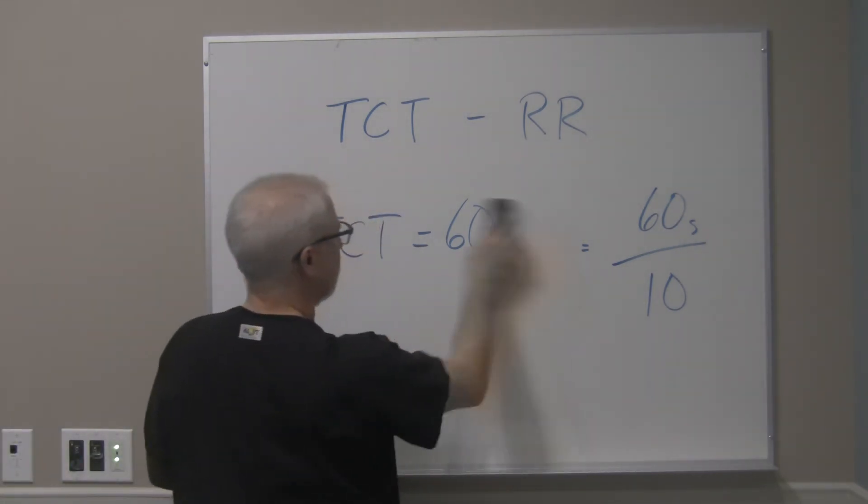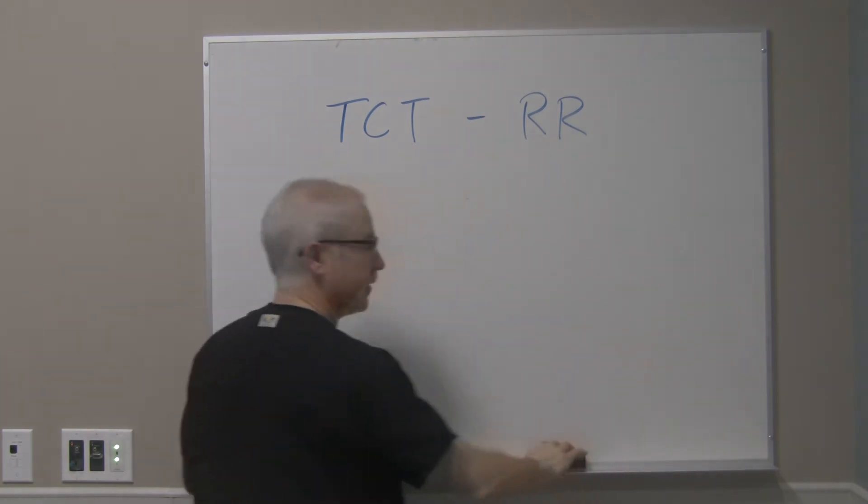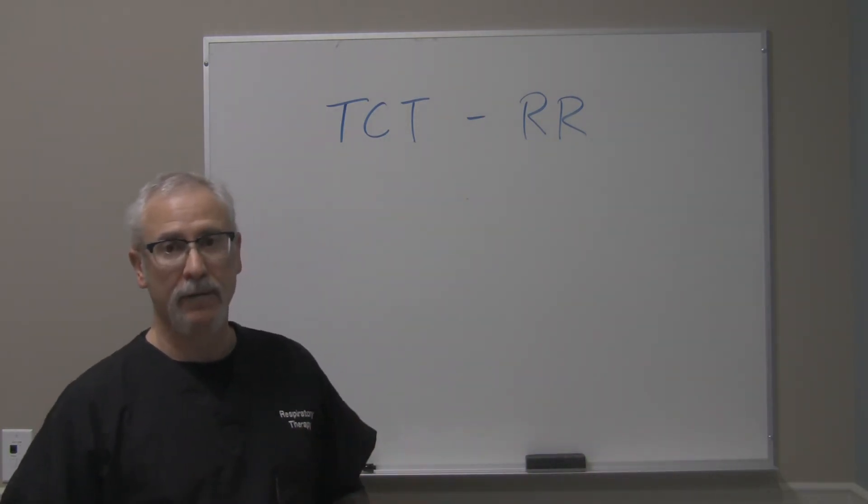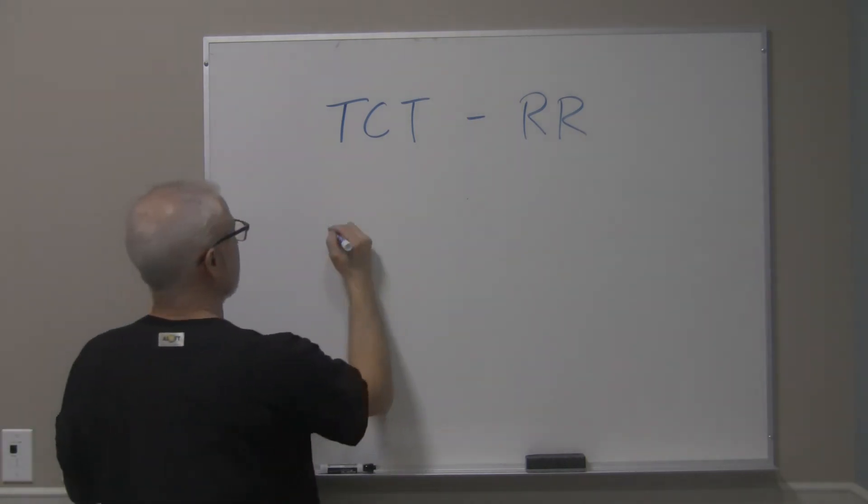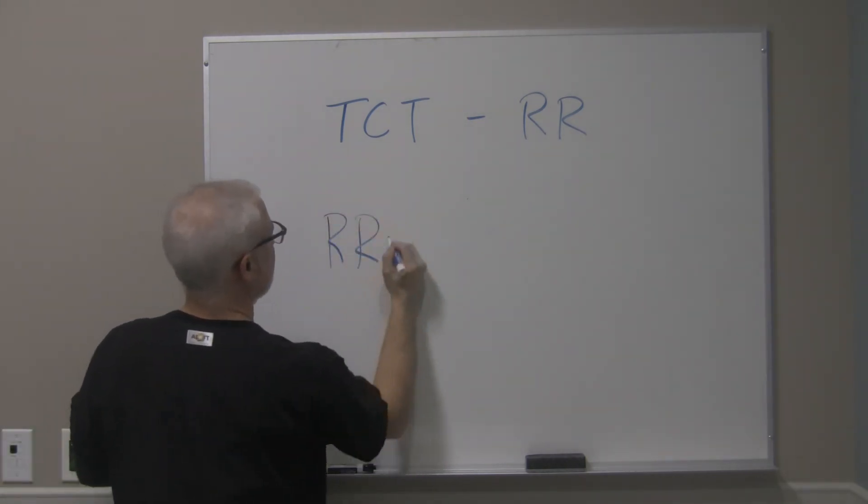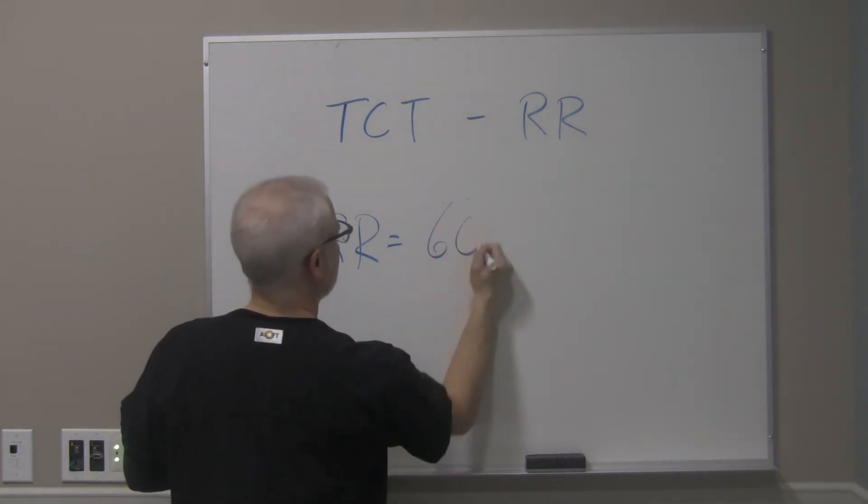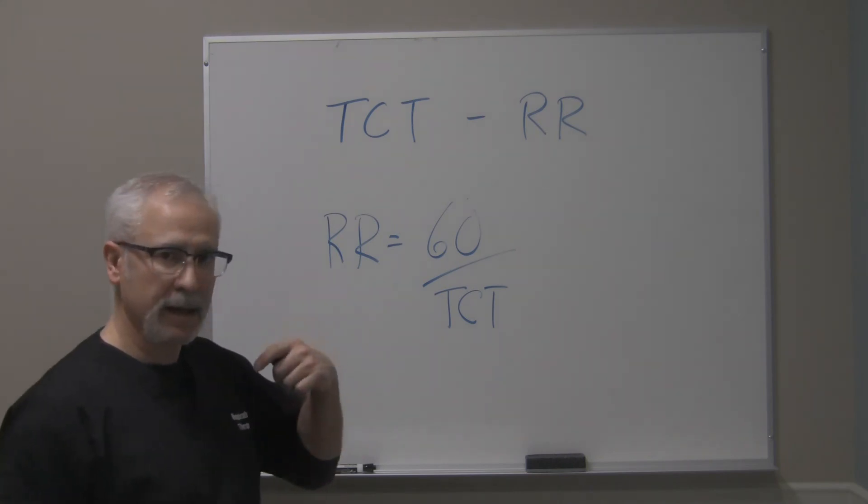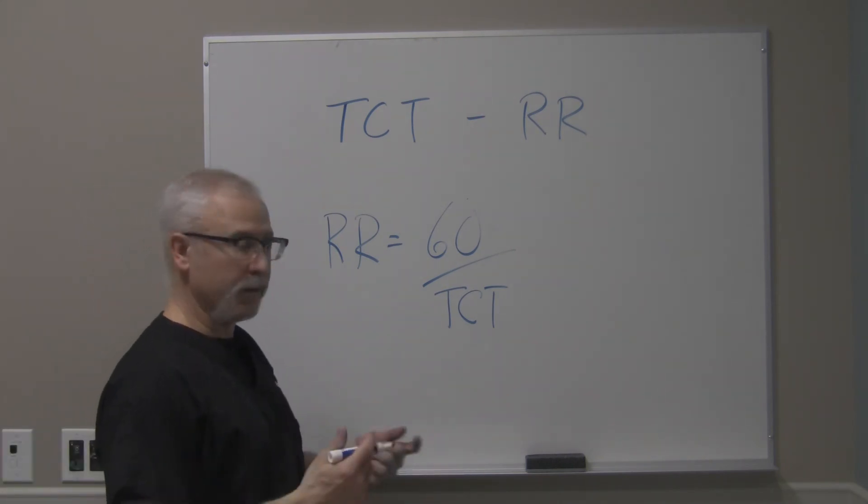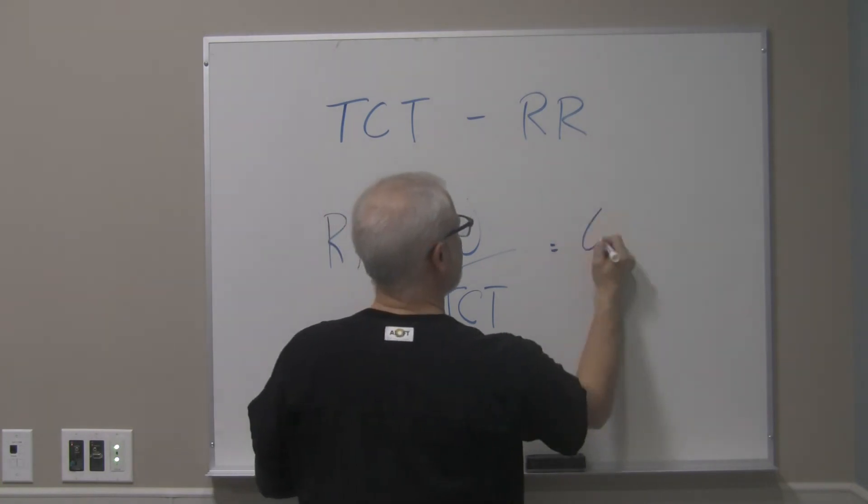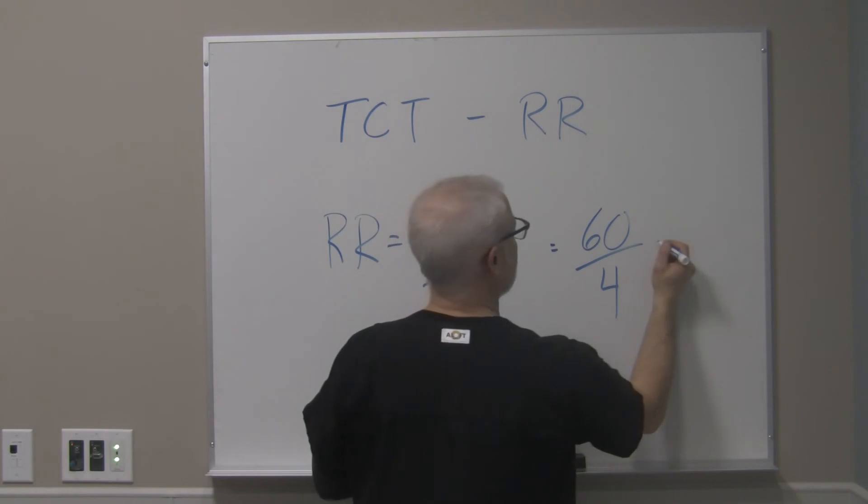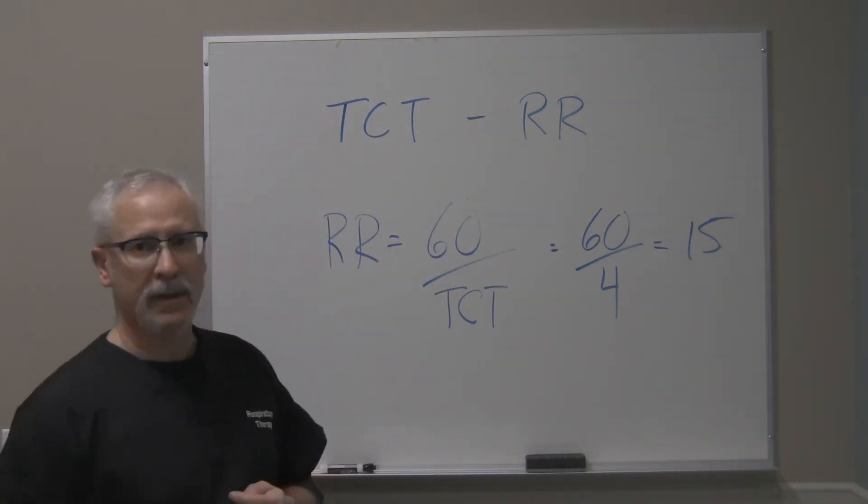Now, you can also use that formula to figure out what the patient's respiratory rate is if you happen to only have total cycle time. So that formula is, the respiratory rate is equal to 60 divided by the total cycle time. So if you had a total cycle time of, let's say for example, 4 seconds, 60 divided by 4 is 15. The patient's respiratory rate is 15 breaths per minute.